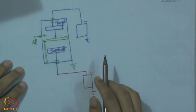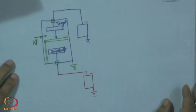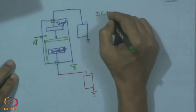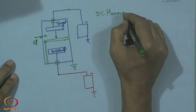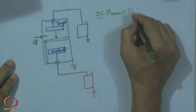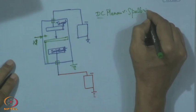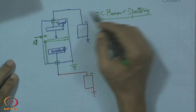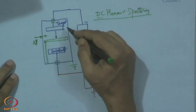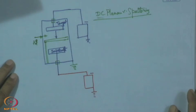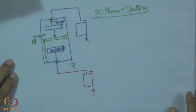This is still what we call DC planar diode sputtering. It is the simplest form, but it is not without difficulty. Even after realizing the many flexibilities this process can offer, it has some basic weaknesses, and there have been numerous efforts to improve the situation and make the process more efficient and productive.